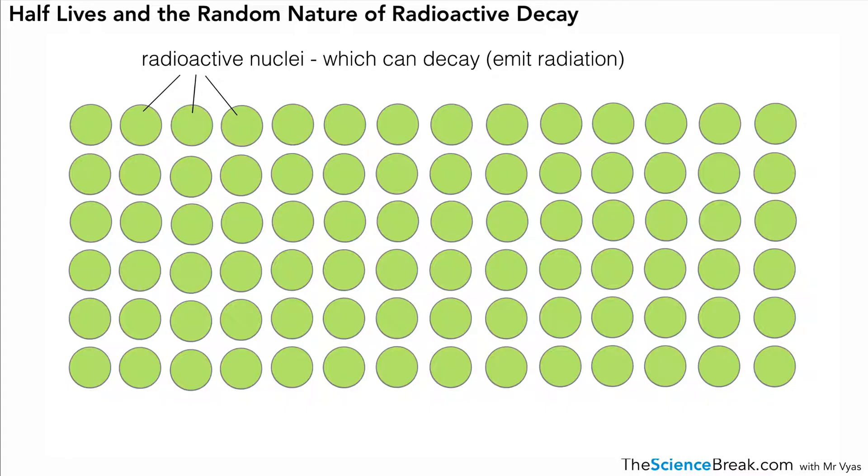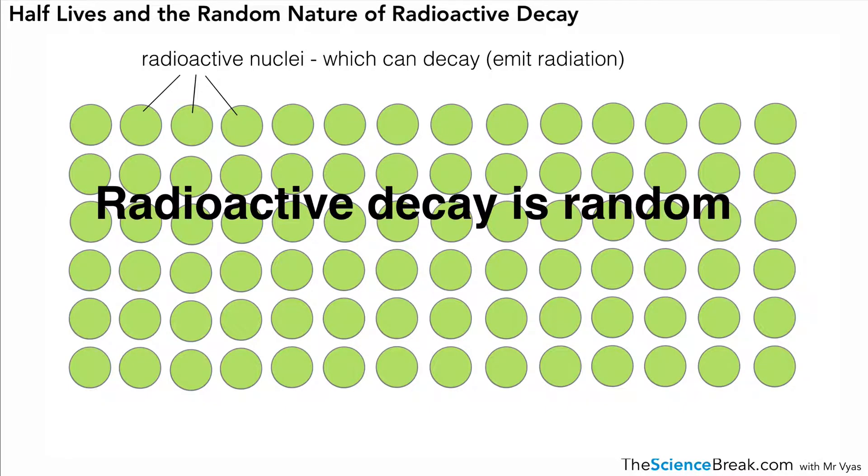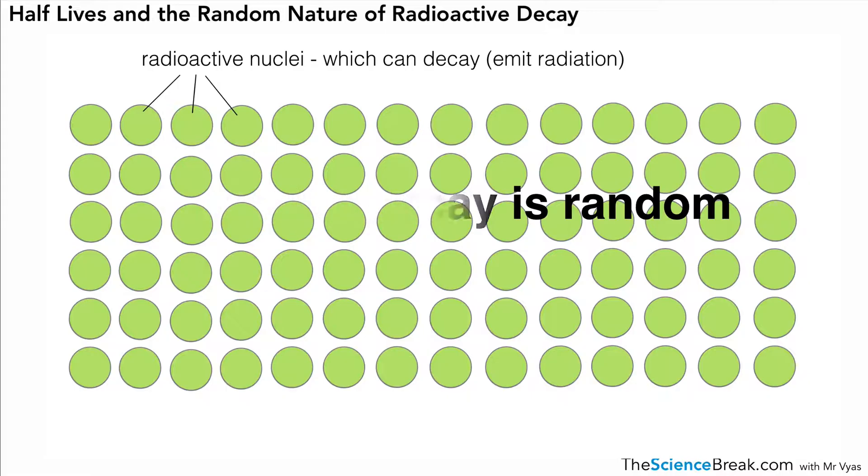Here are our radioactive nuclei which can decay—in other words, emit radiation. The key point here is that radioactive decay is random. If you were to try and pick which one of these is going to decay first by turning red, which one would you guess? Well, because it's random, it's very difficult to guess the right one. The point we're making is that radioactive decay is a random process and it's impossible to predict which atom or nucleus is going to decay next.